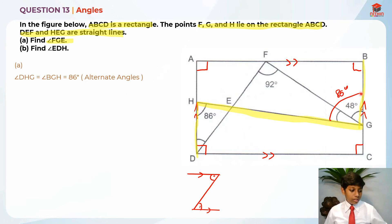And then after that, we know that this is 86 degrees. And we want to find angle FGE. So basically we just take 86 degrees minus 48 degrees and it will give us angle FGE. So the answer is 38 degrees for part A. Now let's move on to part B.